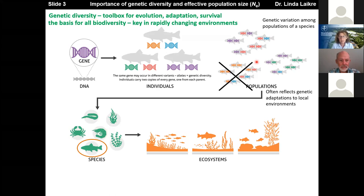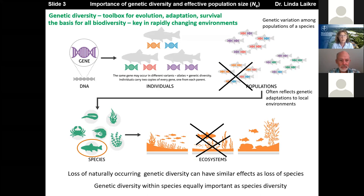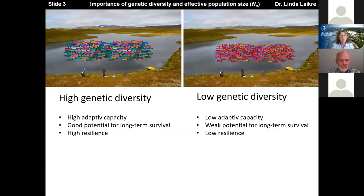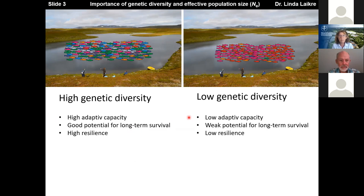If we lose genetically distinct populations, that can have equal negative effects on ecosystems as species diversity loss has. We know from extensive genetic research over the past 50-60 years that high genetic diversity within a species is often associated with high adaptive capacity, good potential for long-term survival, and high resilience. The opposite is true for populations with low genetic diversity — they have lower adaptive capacity, weaker potential for long-term survival, and low resilience. This low genetic diversity is often associated with small population size.